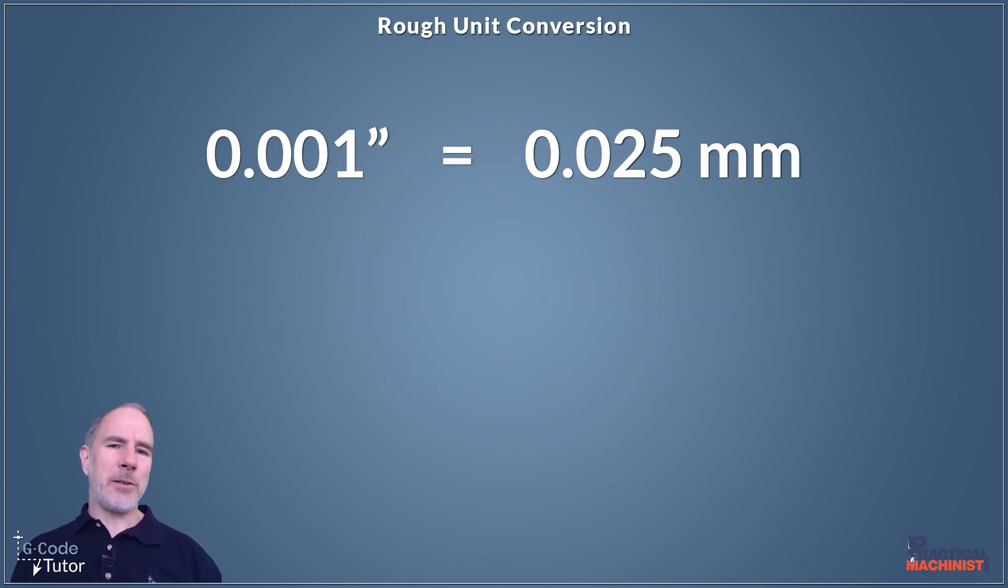Let's start by looking at a thousandth of an inch, or one thou. So 0.001 of an inch. That 25.4 number comes in again, because this equals 0.025 of a millimeter. Roughly we can say that one thou is 0.02 of a millimeter. This helps us visualize in our heads how big we are in metric when we only know imperial or vice versa.